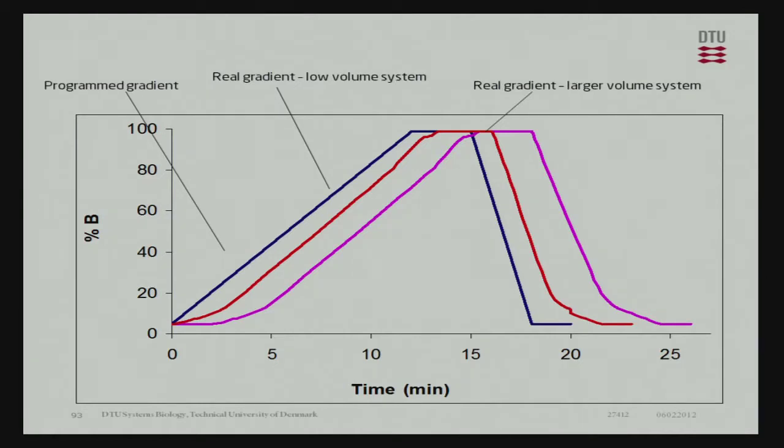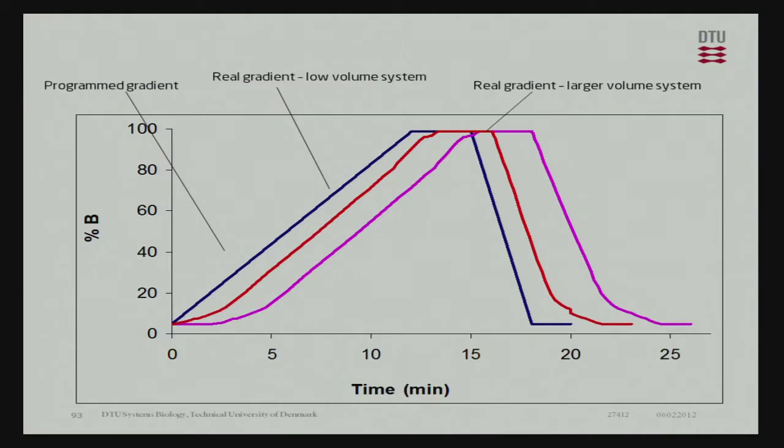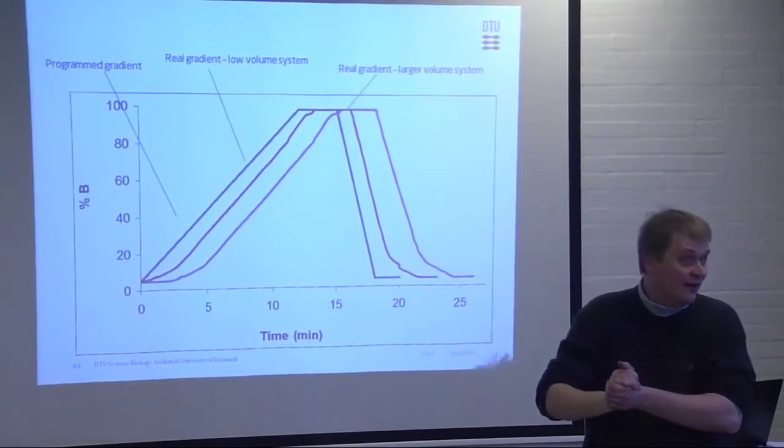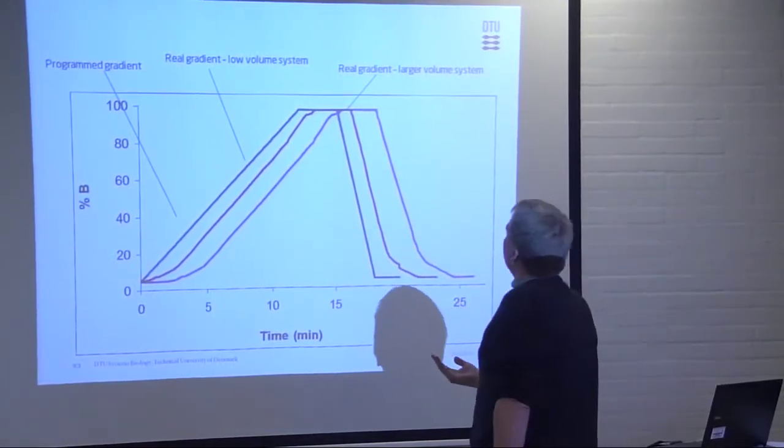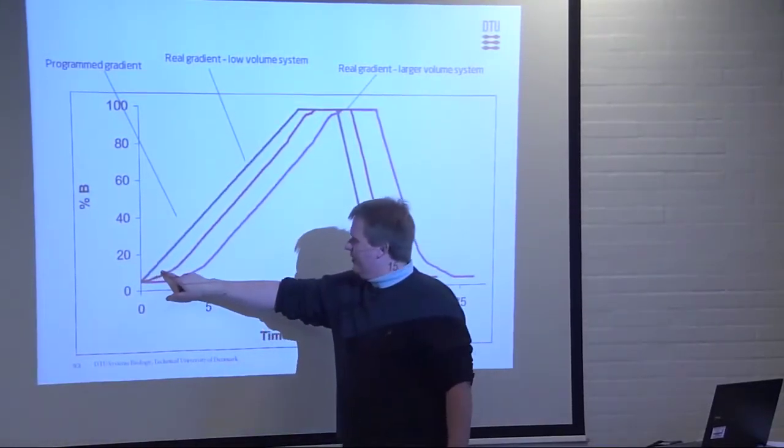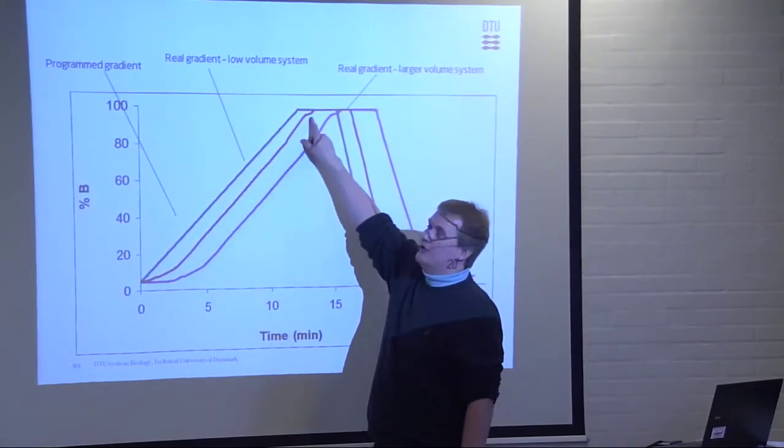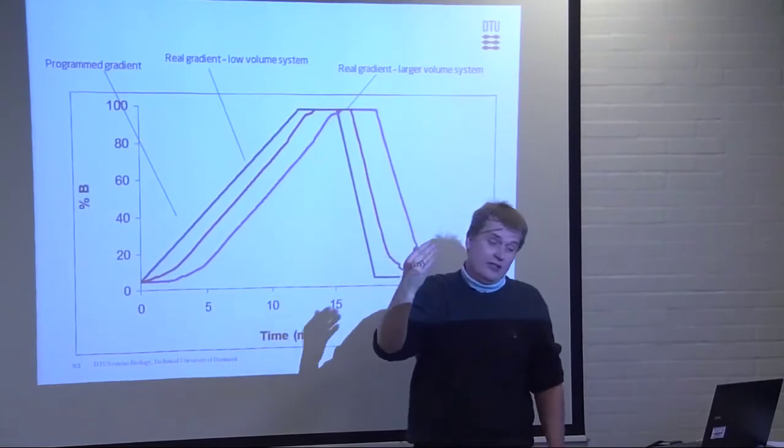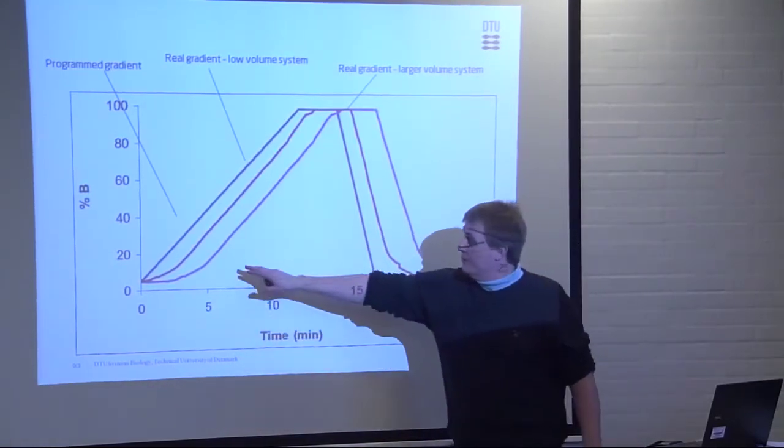So again, this is the easy one. This is the one, the blue one here. This is the one you just type into the computer, and then you think, this is what I get. The red one, if you have a very modern system, is probably what you get. But if you have an older system, or a system where you just put in a bigger mixer, you could have the purple here.